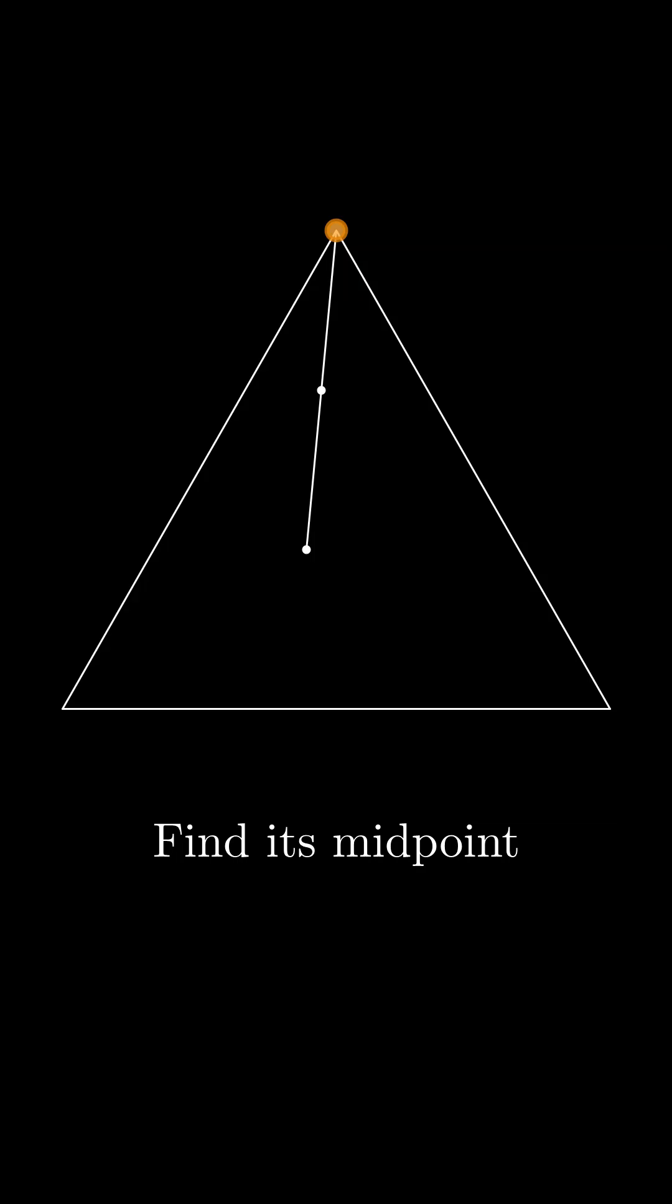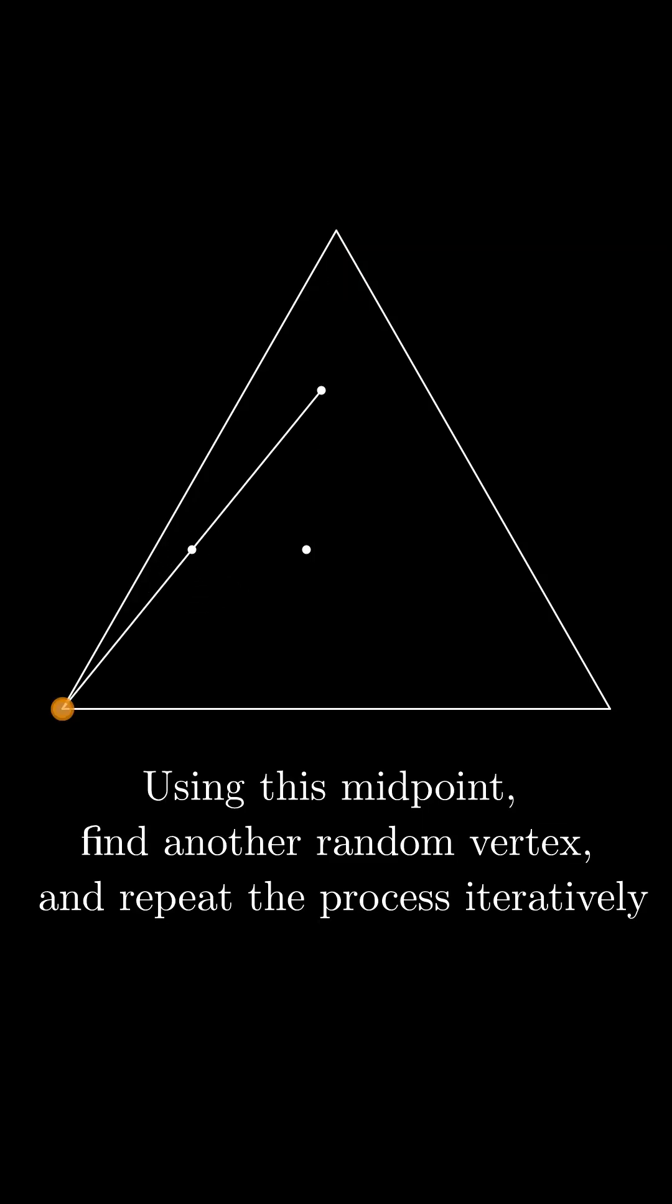Now use this midpoint, choose another random vertex and repeat this process iteratively.